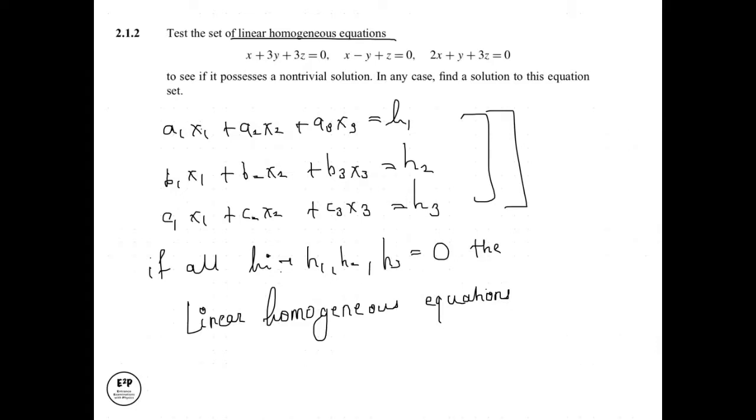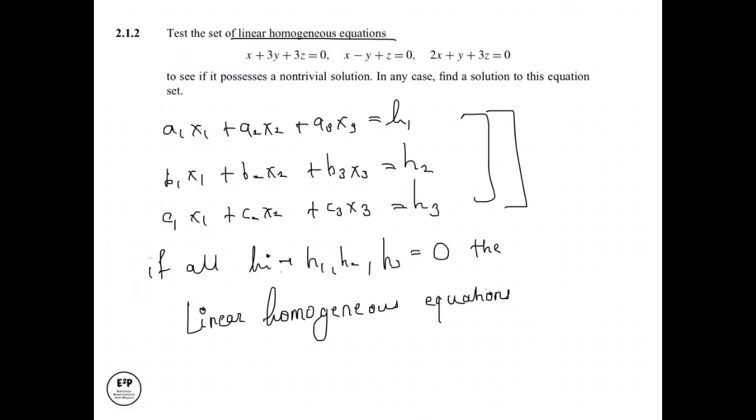Now let's move to the solution part. Before we do that, let's have a determinant of the coefficients. From this set of equations, the coefficients are a1, a2, a3, b1, b2, b3, c1, c2, c3. So we will have a determinant of these coefficients, which will look like a 3x3 matrix.